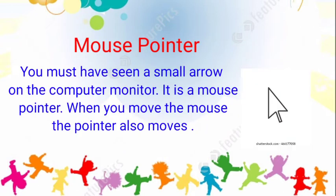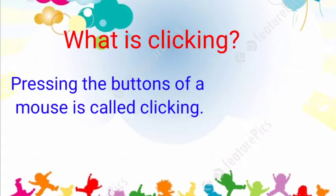Now, what is the mouse pointer? You must have seen a small arrow on the computer monitor — that is the mouse pointer. When you move the mouse, the pointer also moves in the same direction.